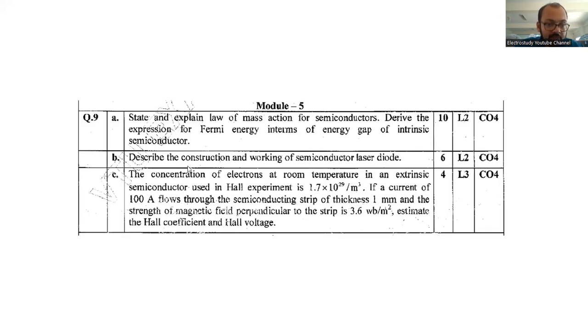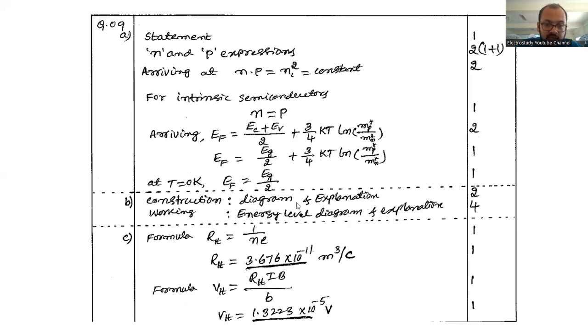Question number 9b: Describe the construction and working of semiconductor laser diode. So for construction, you are supposed to explain the components of each segment. Diagram and suitable explanation you are expected to present in a neat fashion. Possibly draw the energy level diagram. And wherever the points are there, you have to highlight it.